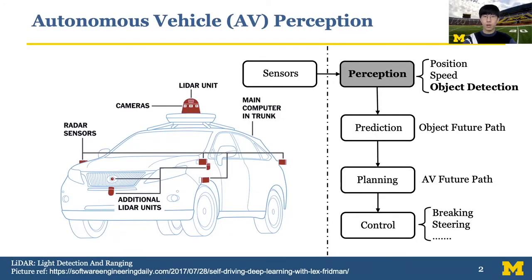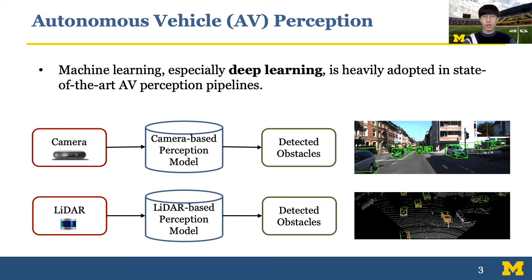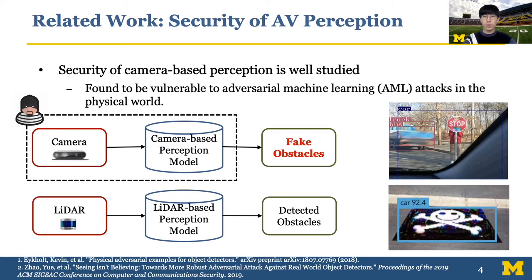Autonomous vehicles, or AVs, are undergoing rapid development, and some are already operating on public roads like Google Waymo and Baidu Apollo. An AV usually relies on multiple onboard sensors for data collection, like cameras and LiDAR, and feeds the data to the perception module. Therefore, perception serves as the foundation of the entire AV system. Nowadays, deep neural networks are heavily adopted in state-of-the-art AV perception pipelines. Camera and LiDAR are the most reliable sensors, where cameras generate 2D images and LiDAR generates 3D point clouds. The corresponding DNN models output bounding boxes of detected objects with type and confidence scores.